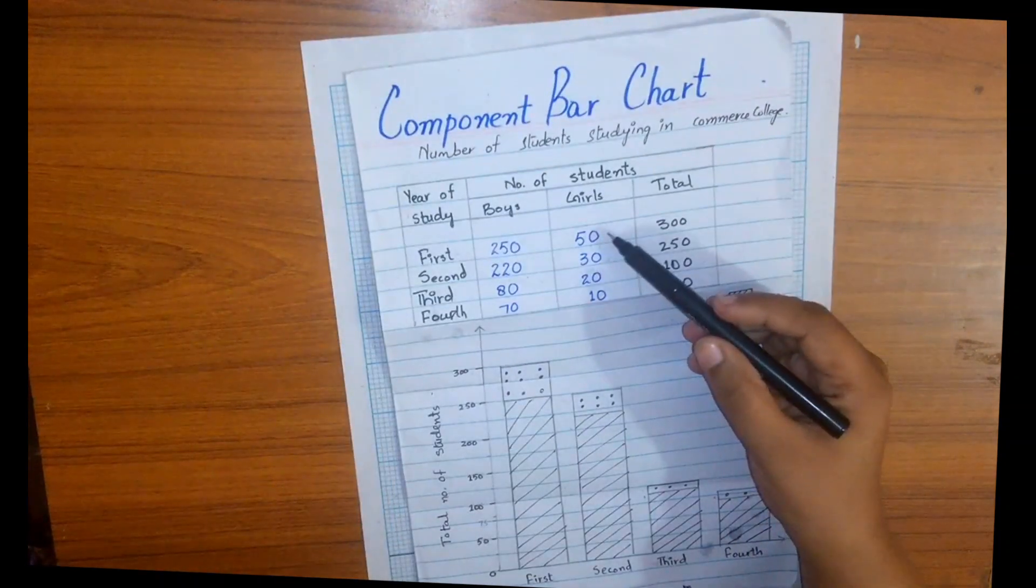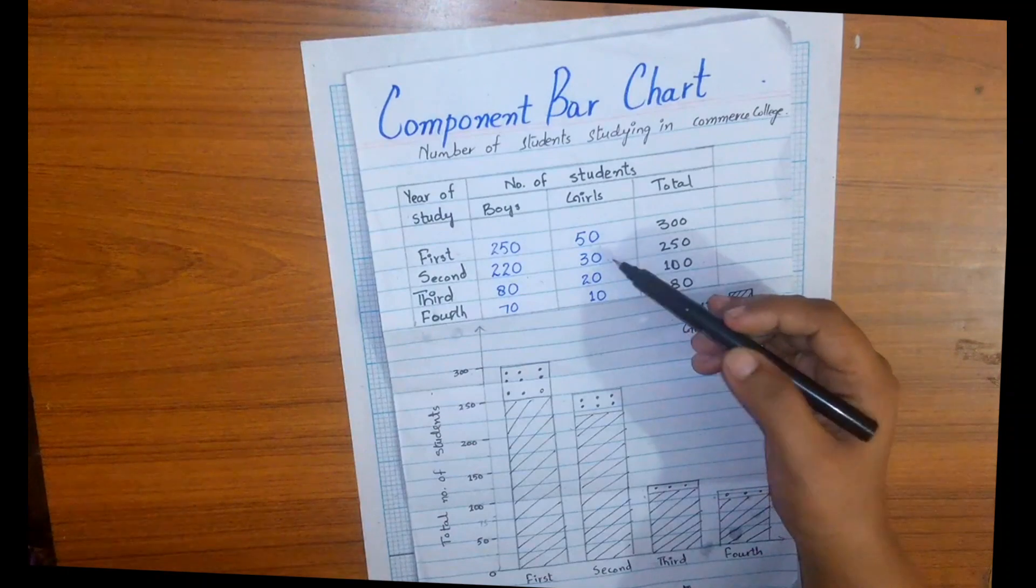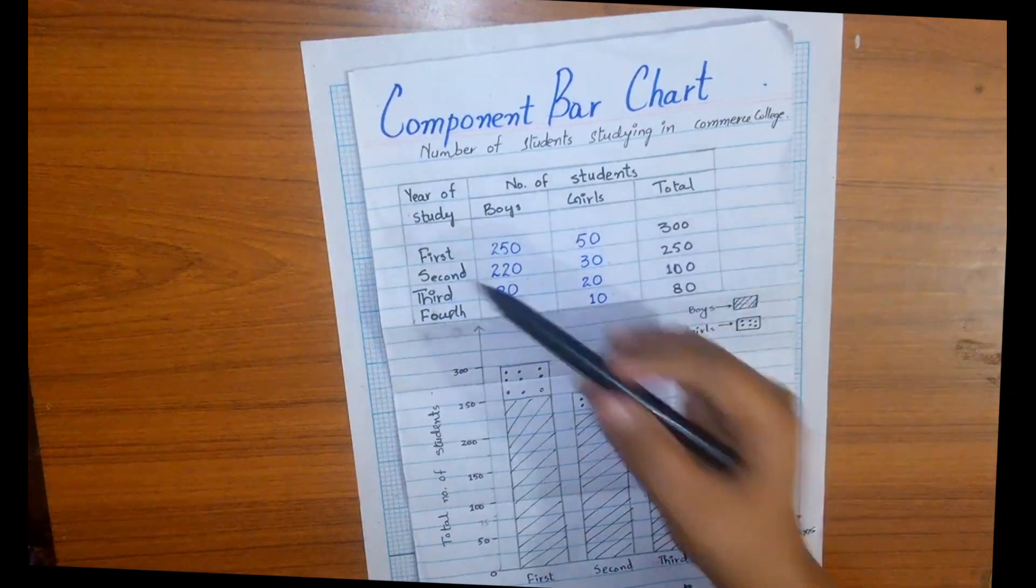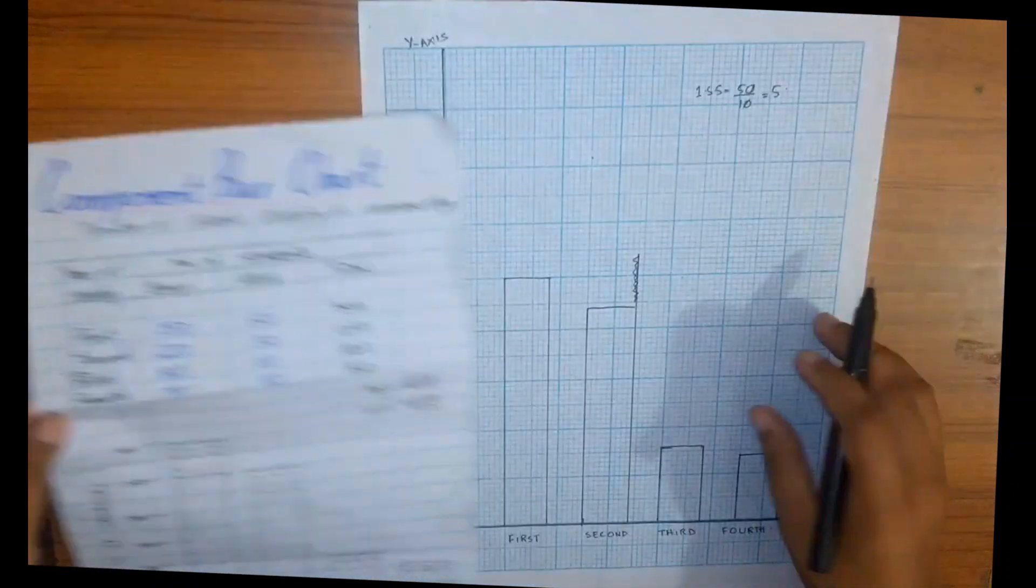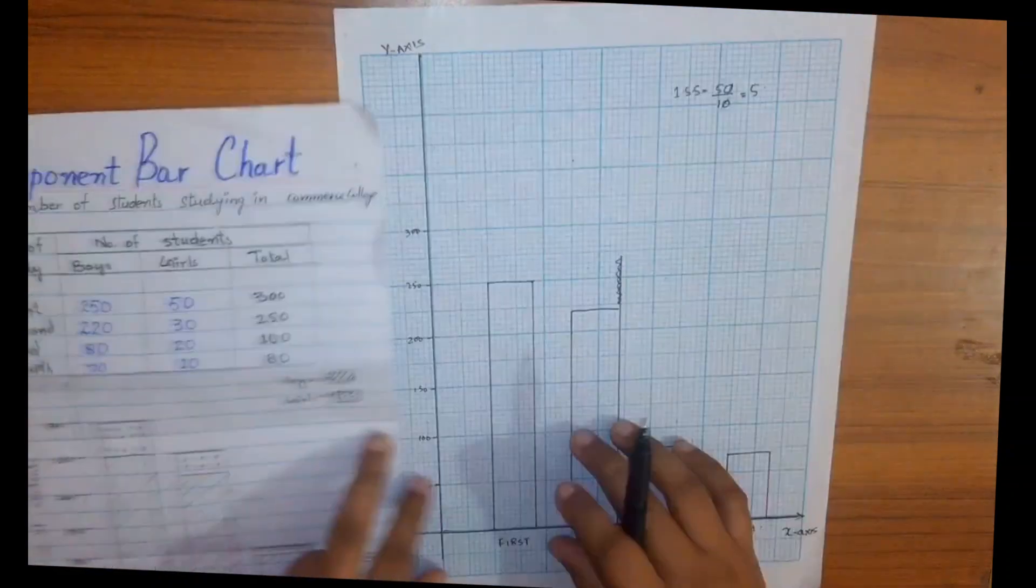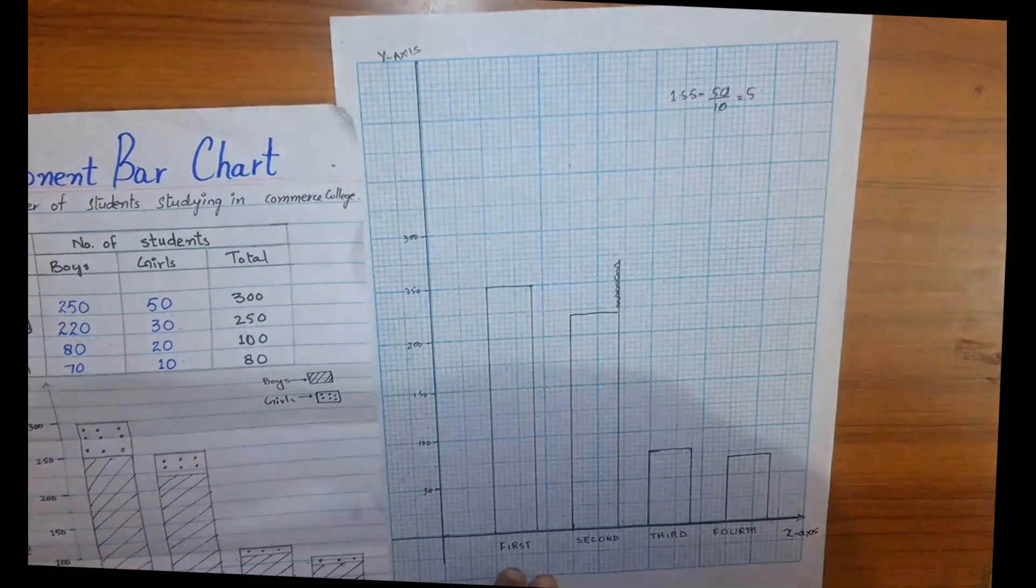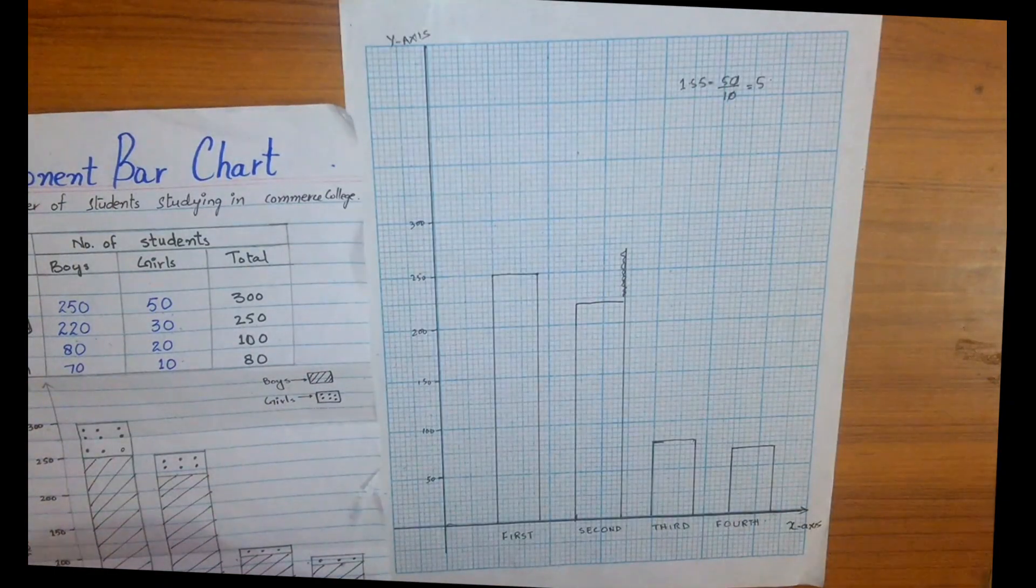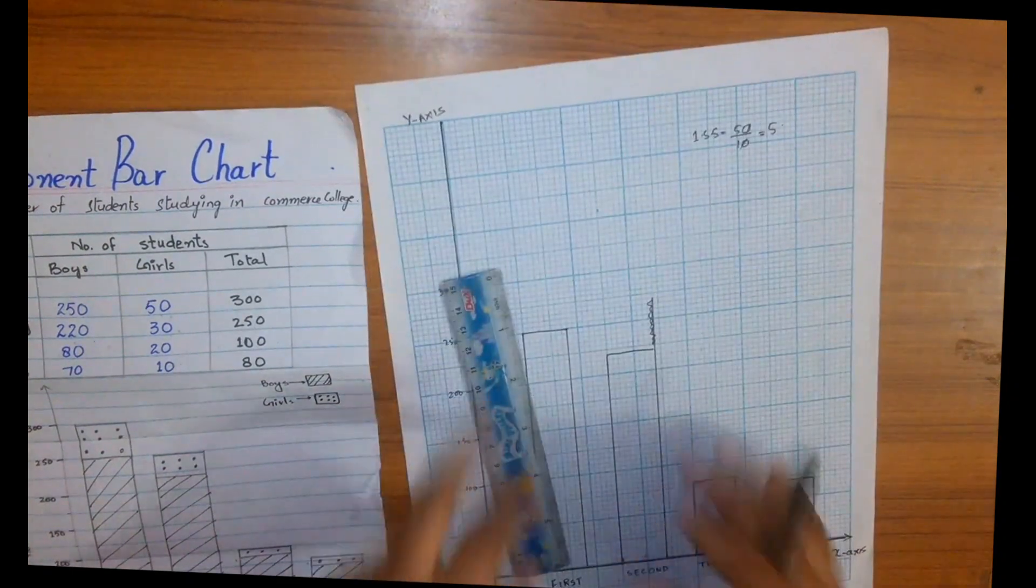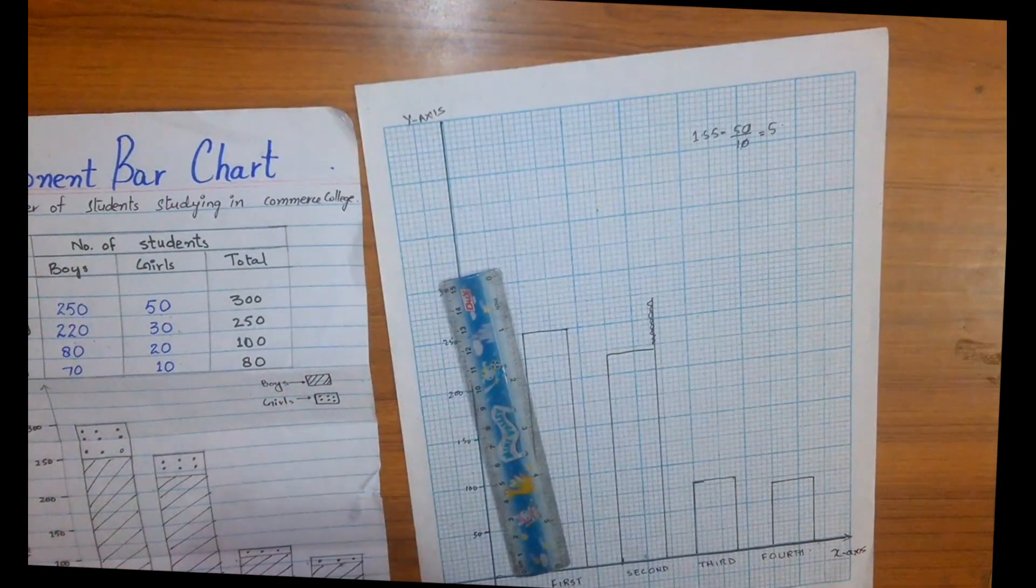Now we are going to construct bars for girls who are studying in different years, and we will construct these graphs for girls above the bars of boys so it will look like a subdivided bar chart or component bar chart.